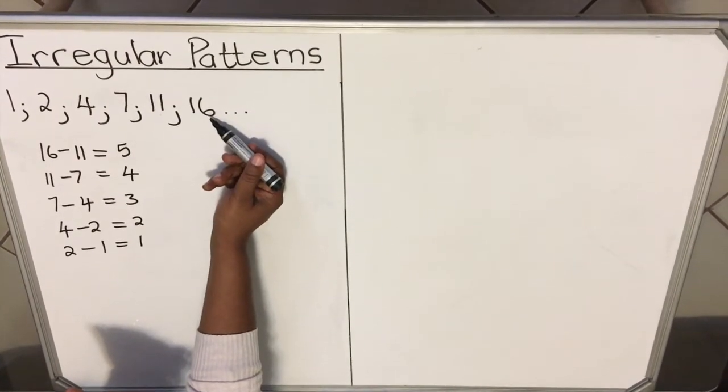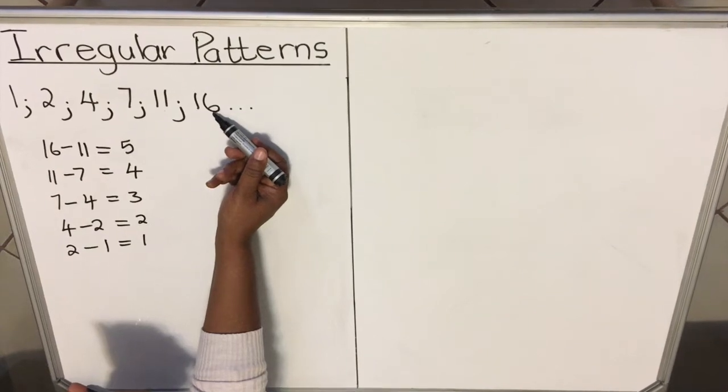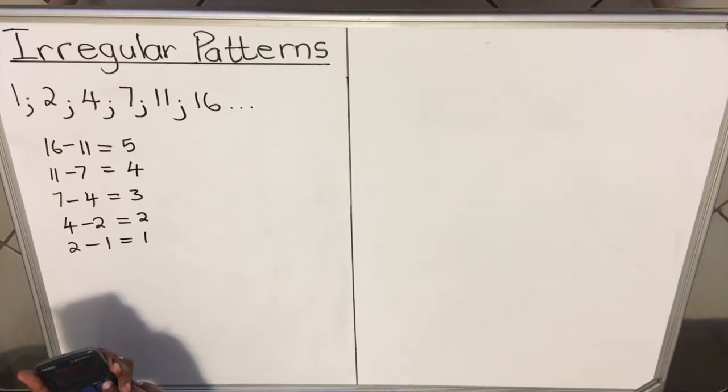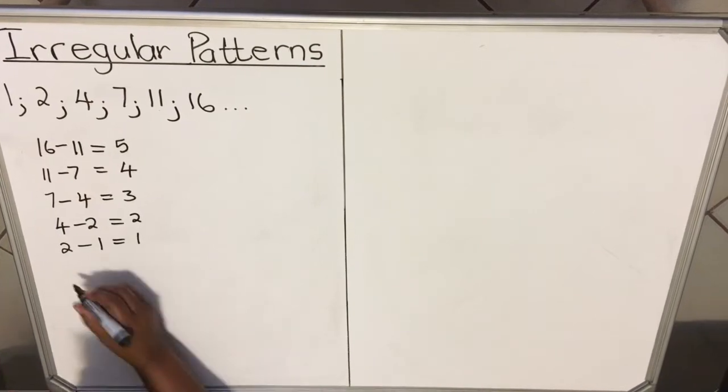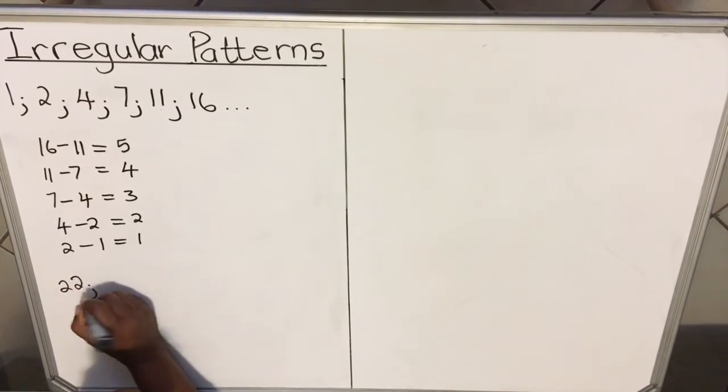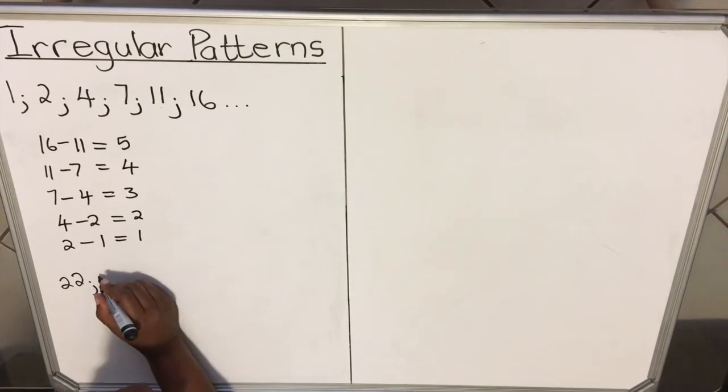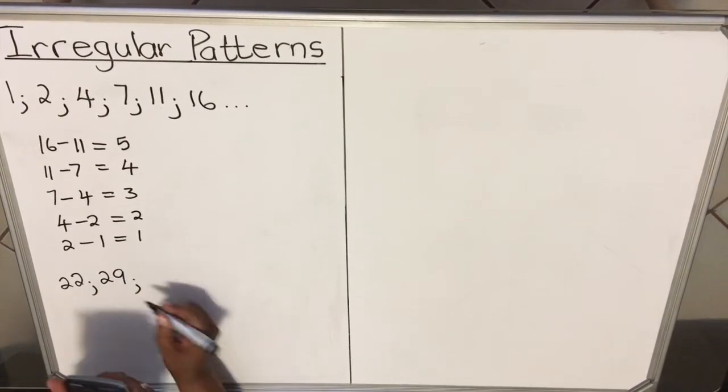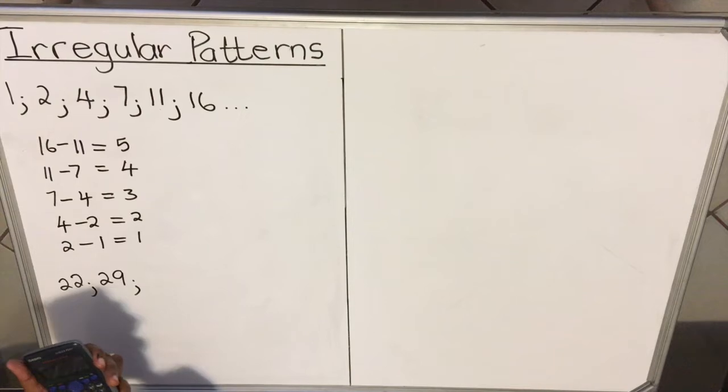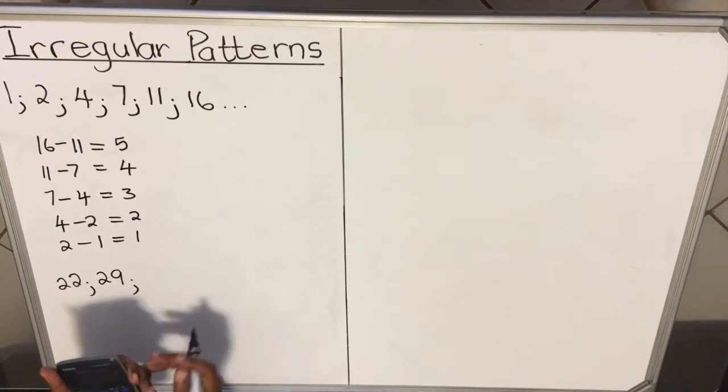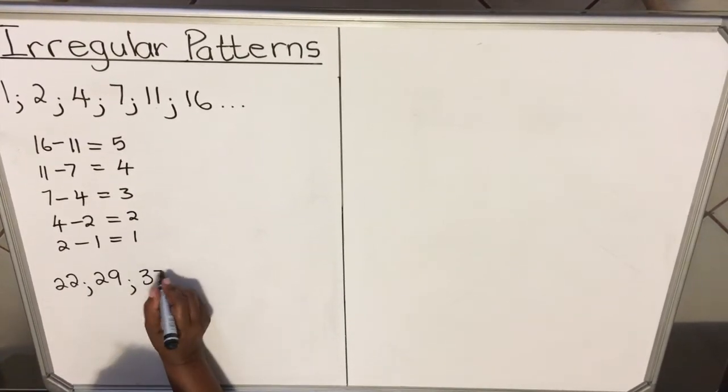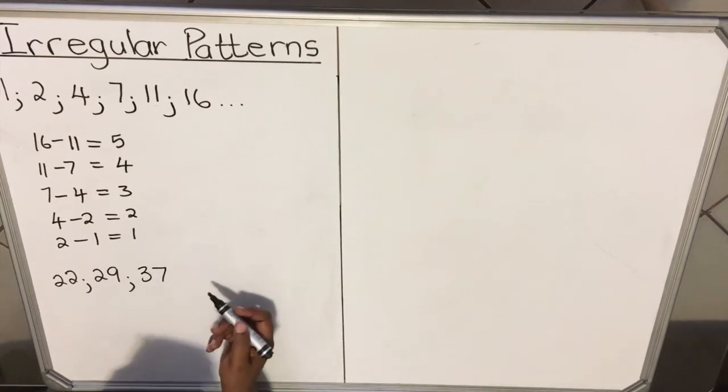The last time they added 5 and got 16. If they say find the next three terms, they added a 5, so for this one they add 6. It will be 16 plus 6, then you'll get 22. 22 plus 7, you get 29. 29 plus 8, you get 37. So this is how the pattern works.